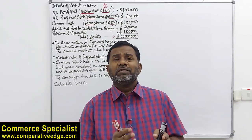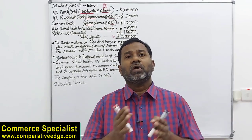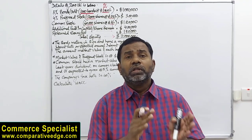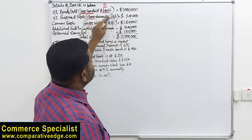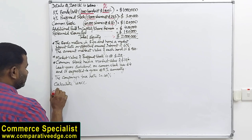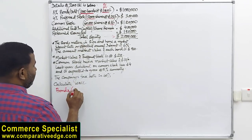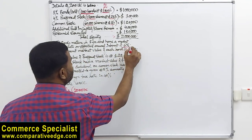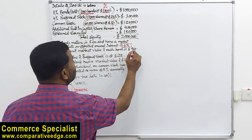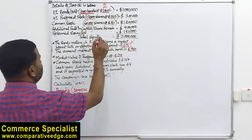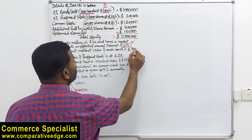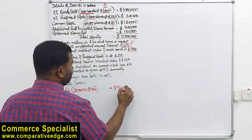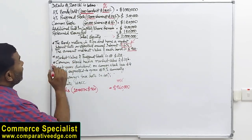We need the weights and the cost. The first step is to convert bonds, preference shares, and common shares from par value to market value. For bonds: the number of bonds is 1,000. The bond matures in five years and has a market interest rate of 6%, but the current market value of each bond is $960. So 1,000 × $960 gives a market value of $960,000 for bonds.